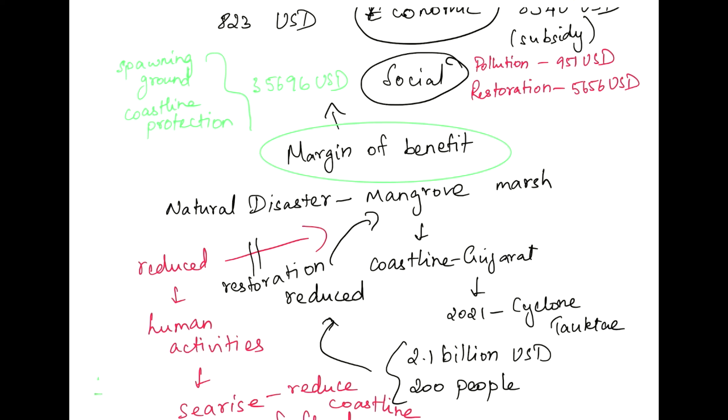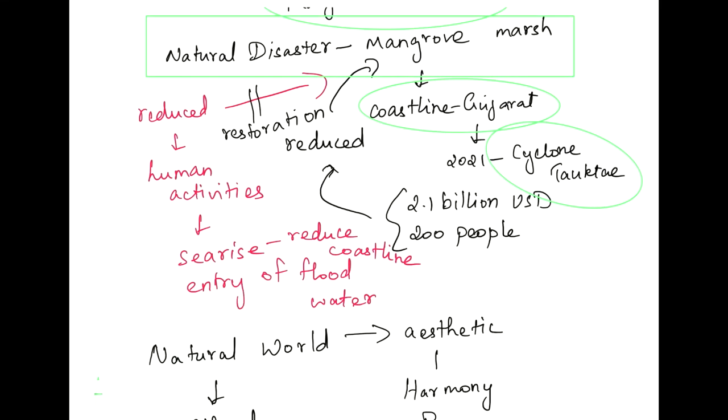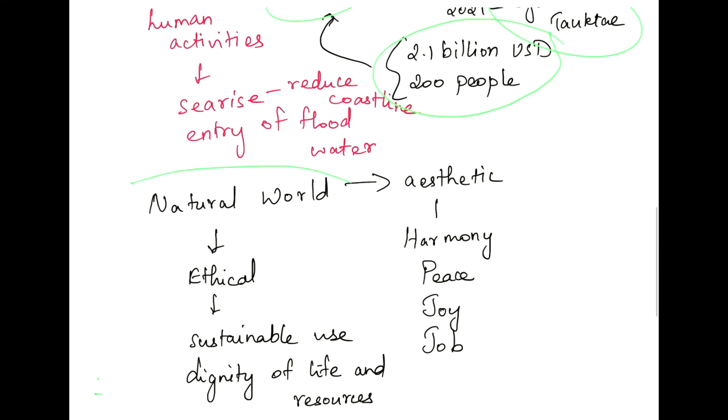And found the role of mangrove marsh in natural disasters, especially during Cyclone Tauktae on the coastline of Gujarat, and how the mangrove marsh could have reduced the loss. And finally we defined natural world in aesthetic terms and ethical terms.